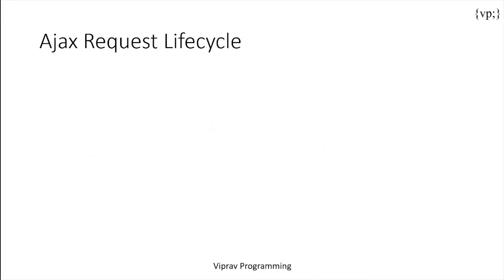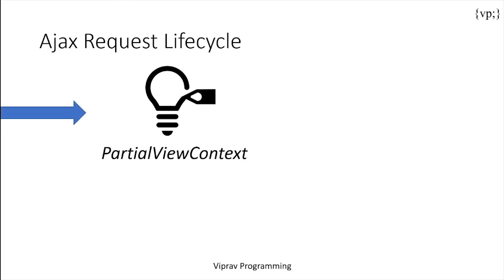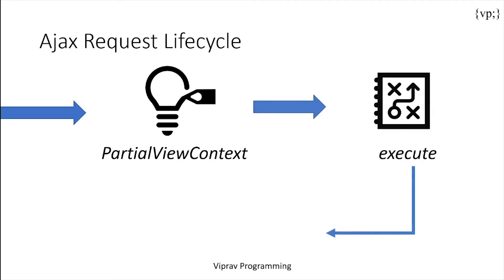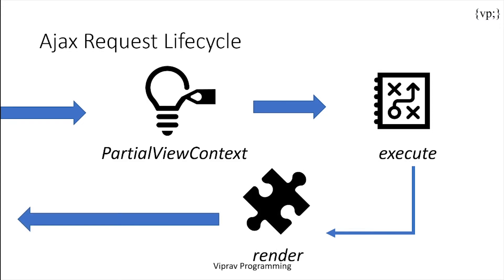Then there's the AJAX request lifecycle. When an AJAX request is received, the state associated with that request is captured by the partial view context. This object allows for the processing and rendering of the components. The components with the execute attribute are processed and run through their own JSF life cycles. Finally, the segments of the component tree that have the render attribute are rendered during the render response phase. The components and their children are then rendered, packaged up, and sent back to the client as a response.